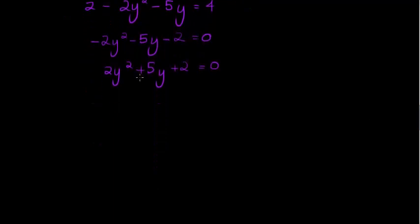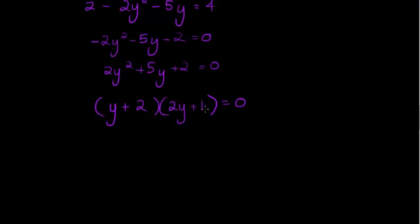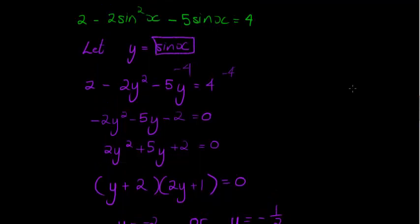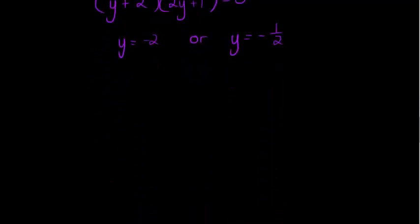Now I can solve this quadratic equation by factoring into two brackets: (y + 2)(2y + 1) = 0. So either y = -2 or y = -1/2. But y was just the placeholder for sinx, so we actually have sinx = -2 or sinx = -1/2.